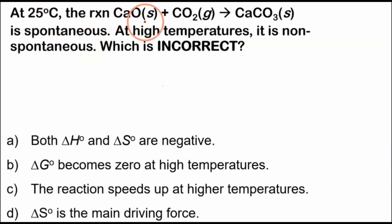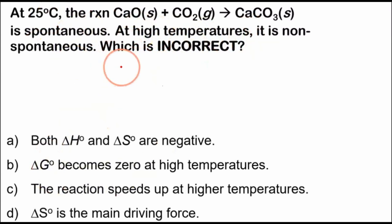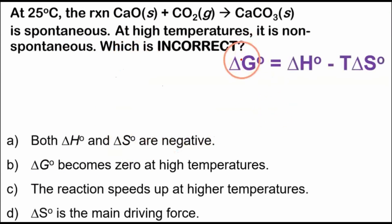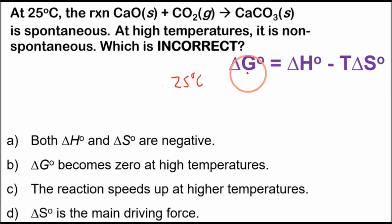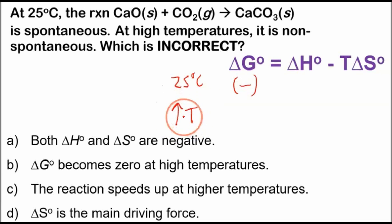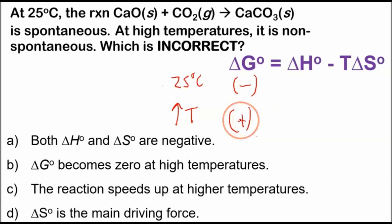Next question. At 25 degrees Celsius, the reaction calcium oxide solid plus carbon dioxide gas produces calcium carbonate solid is spontaneous. At high temperatures it's non-spontaneous. We're told that at 25°C the change in Gibbs energy is negative, and at higher temperatures it becomes non-spontaneous — meaning the change in Gibbs energy is greater than zero. So which answer is incorrect?